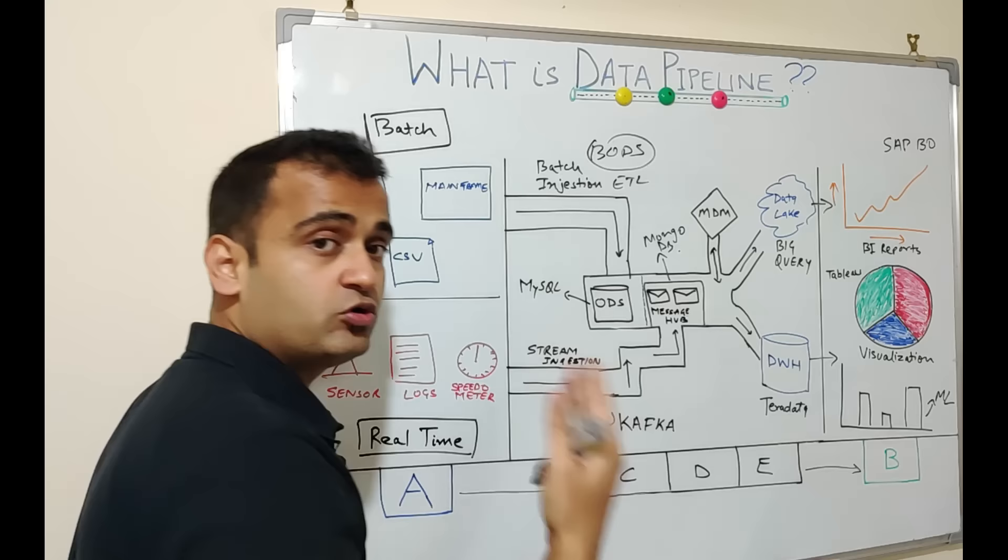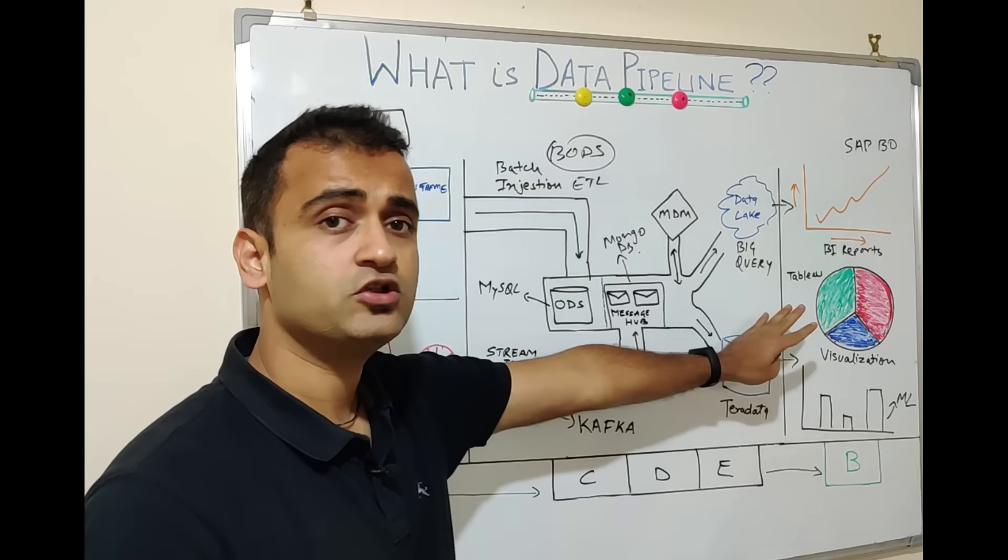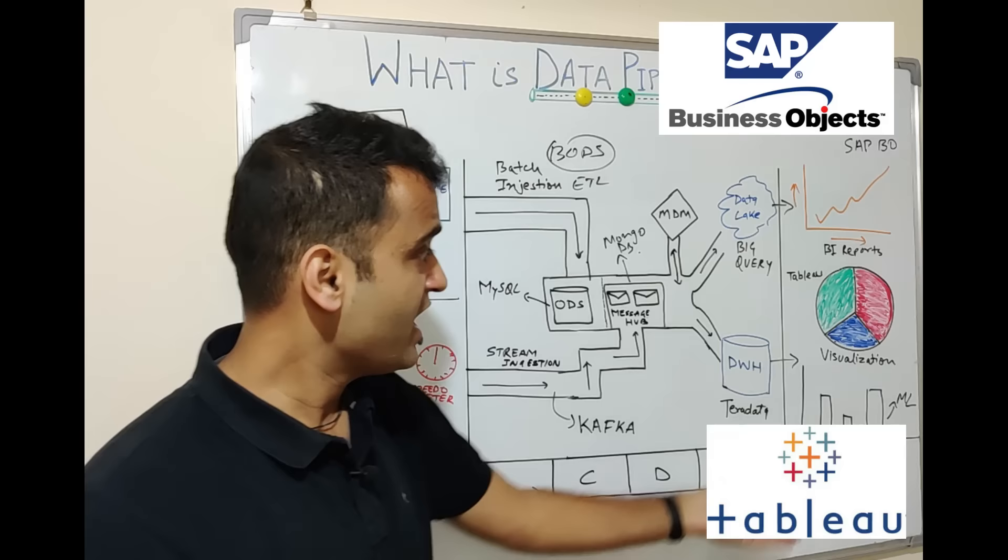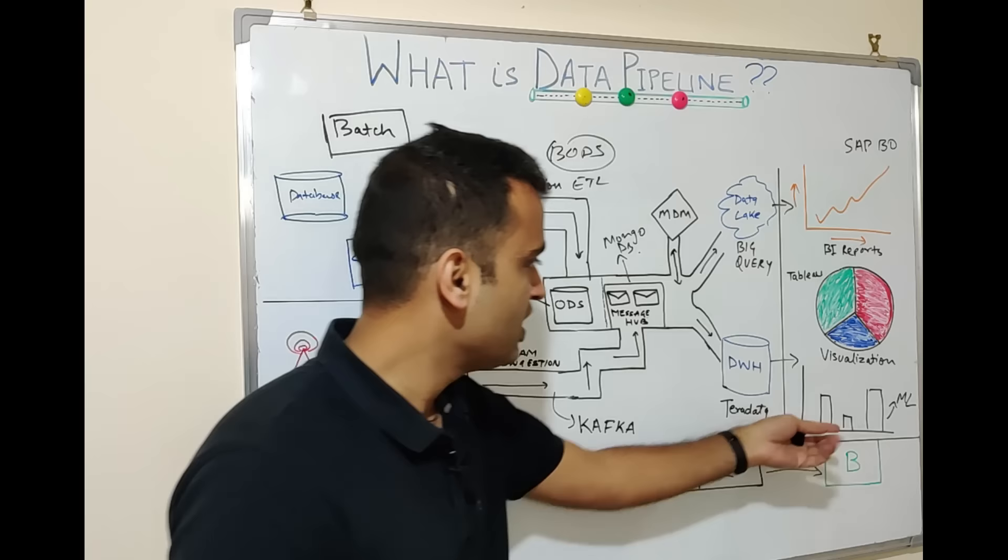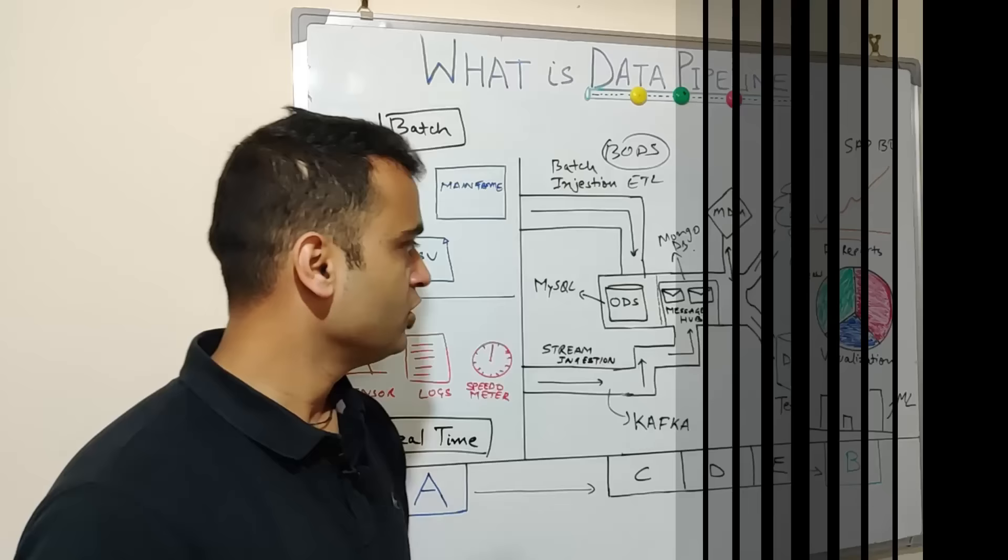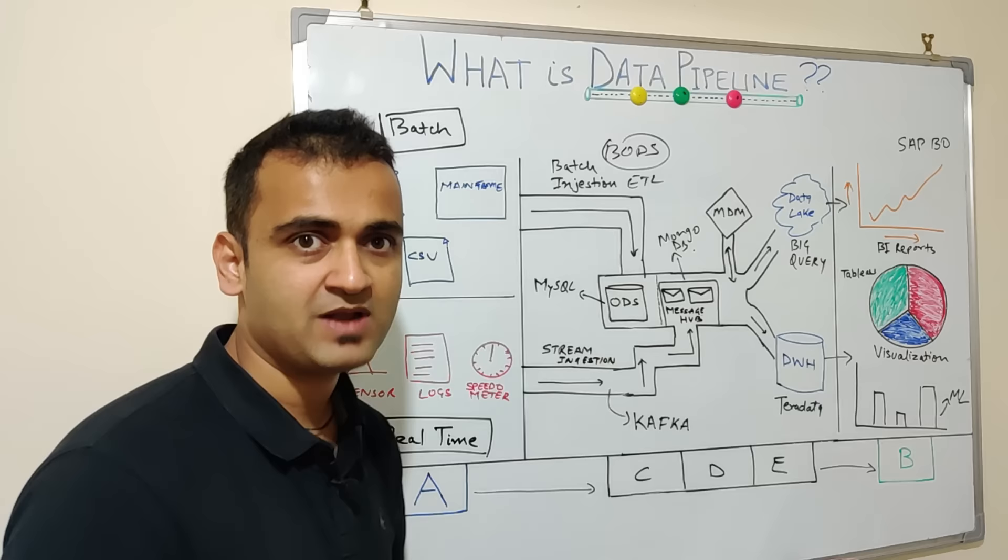In the rightmost end you have the data consumers. These data consumers could be your BI reports, your operational reports, you can have your visualizations using products like Tableau, your reports could use SAP Business Objects for reporting, and then you can have your ML models to run statistical data models and you can derive some machine learning algorithms to run on the data which you are getting from your data pipeline. So this whole design is a glimpse of how advanced a data pipeline could be.